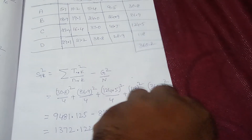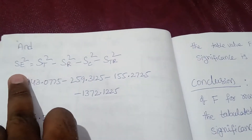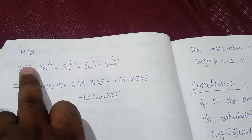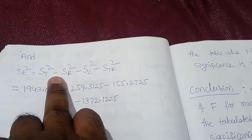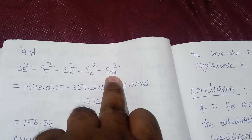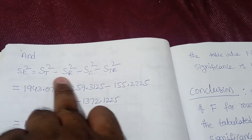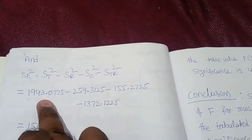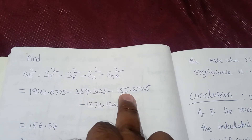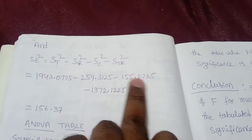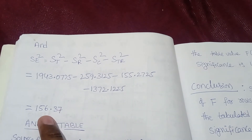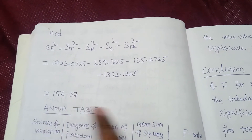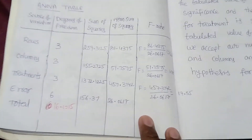We have now calculated row sum of squares, column sum of squares, and treatment sum of squares. The error sum of squares SE² = ST² − SR² − SC² − STr², that is, total minus row minus column minus treatment sum of squares. Substituting all values, we get SE² = 156.37.